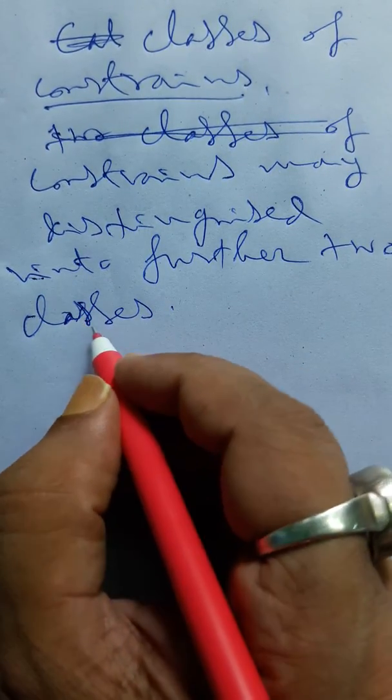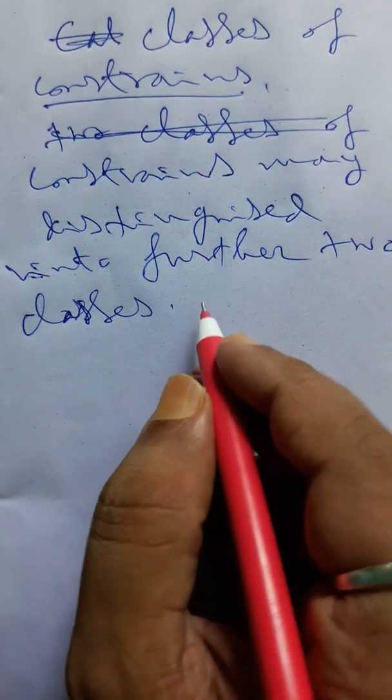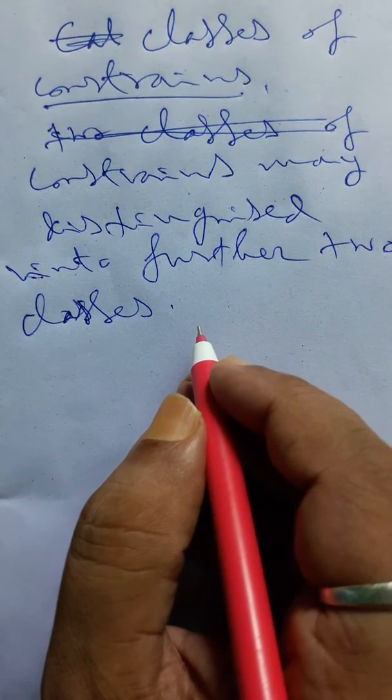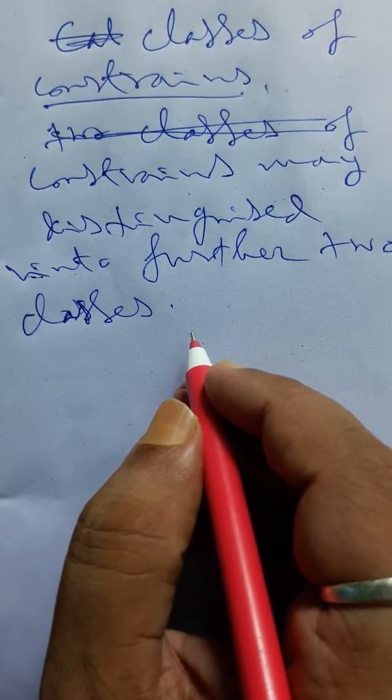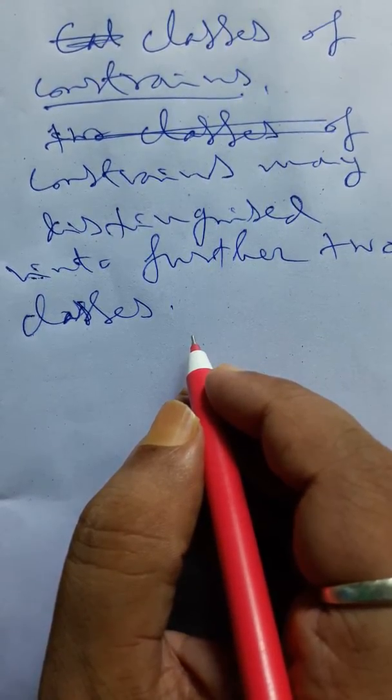That means which constraints we say in the earlier classes, we distinguish another type of classifications. Which type of classes is this? First one is this.